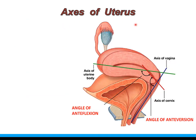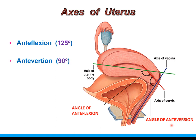Coming to the axis of the uterus: the parts of the uterus do not lie in the same plane, as their axes differ in direction. The axis of the body makes an angle with the axis of the cervix known as the angle of anteflexion, which is 125 degrees. The axis of the cervix makes an angle with the axis of the vagina known as the angle of anteversion, which is 90 degrees. So the uterus shows anteflexion between its body and cervix, and anteversion between its cervix and vagina.